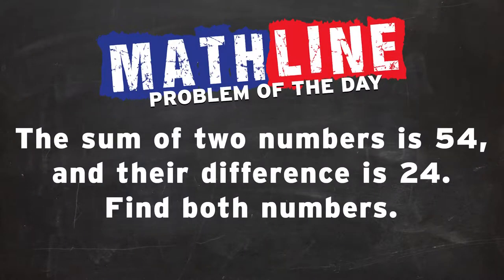Problem of the day time. We have the sum of two numbers is 54. That's pretty nice to know. And their difference is 24. We're looking for two numbers here. We're looking for both numbers.